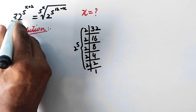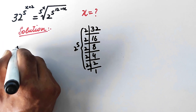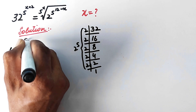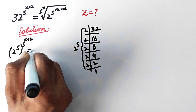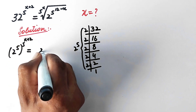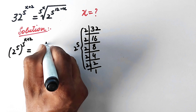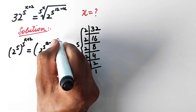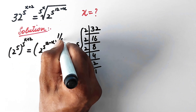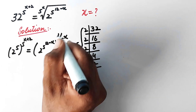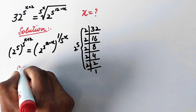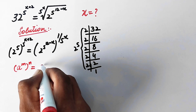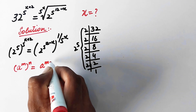So here we can write 2 raised to the power 5 raised to the power 5 raised to the power x plus 2, and on the right side we can write 2 raised to the power 5 raised to the power 12 minus x. We can write the root as 1 over 5, i.e., raised to the power 1 over 5 raised to the power x. By using the rule of exponents, a power m raised to the power n is equal to a power m times n.